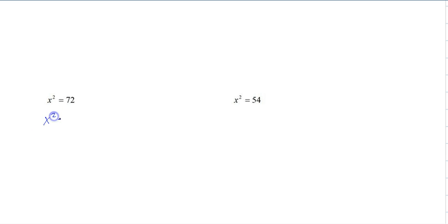So we take the square root of each side. Put a little plus or minus. So that gives us x equals plus or minus that. So what is the square root of 72?